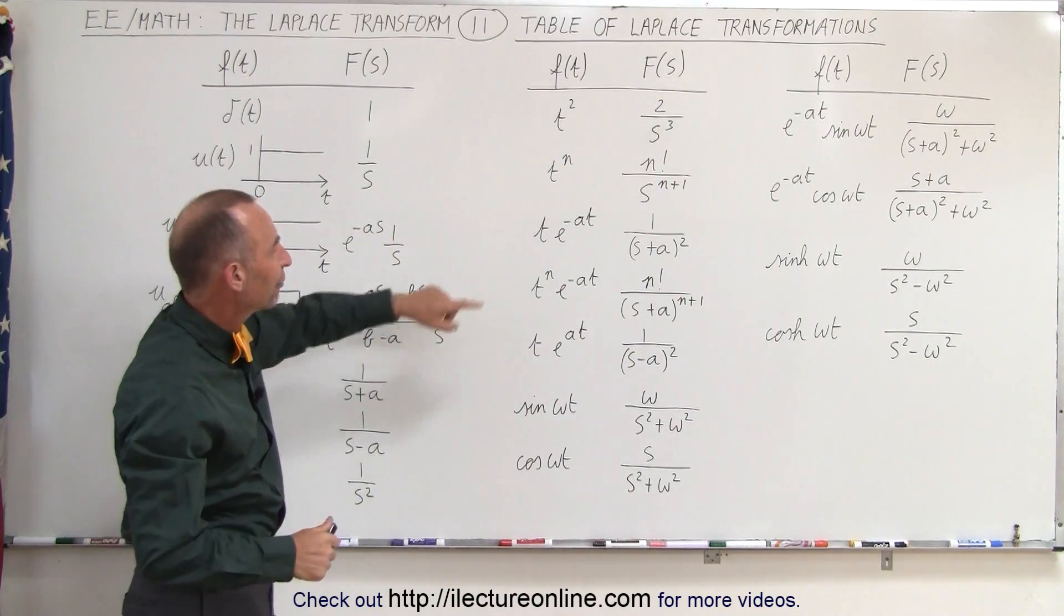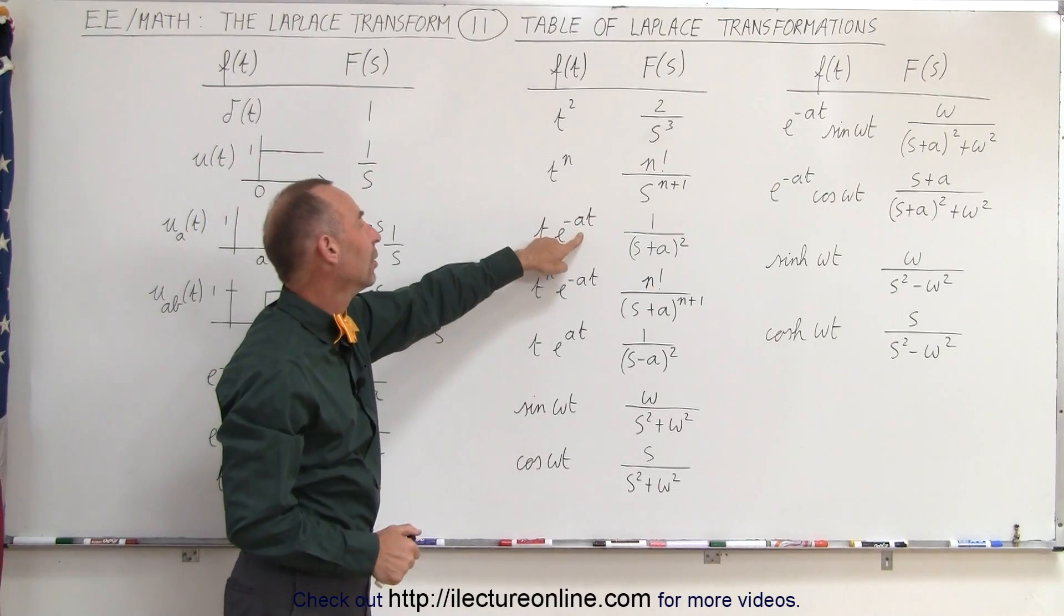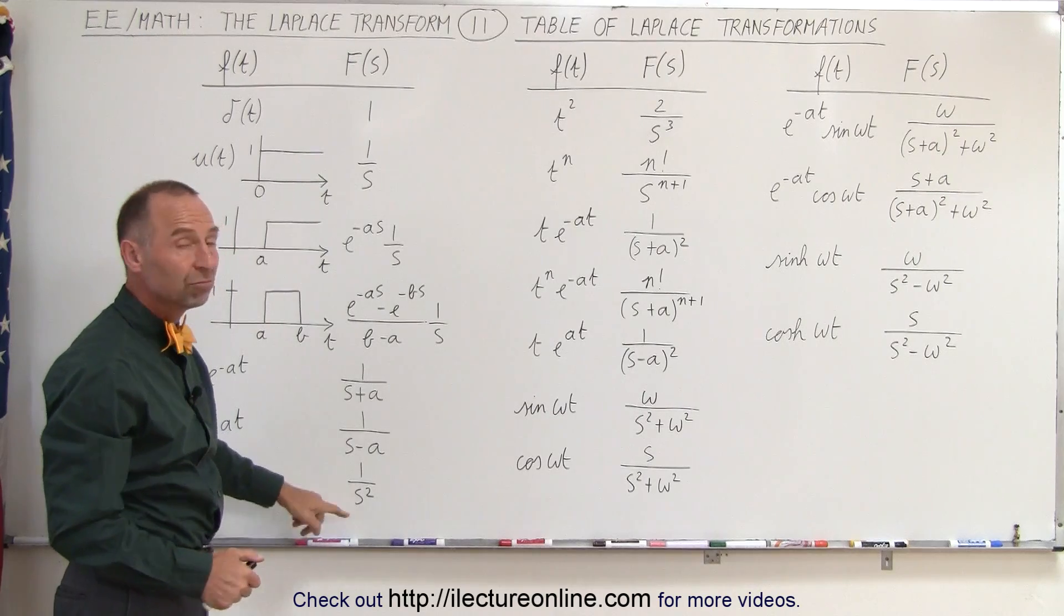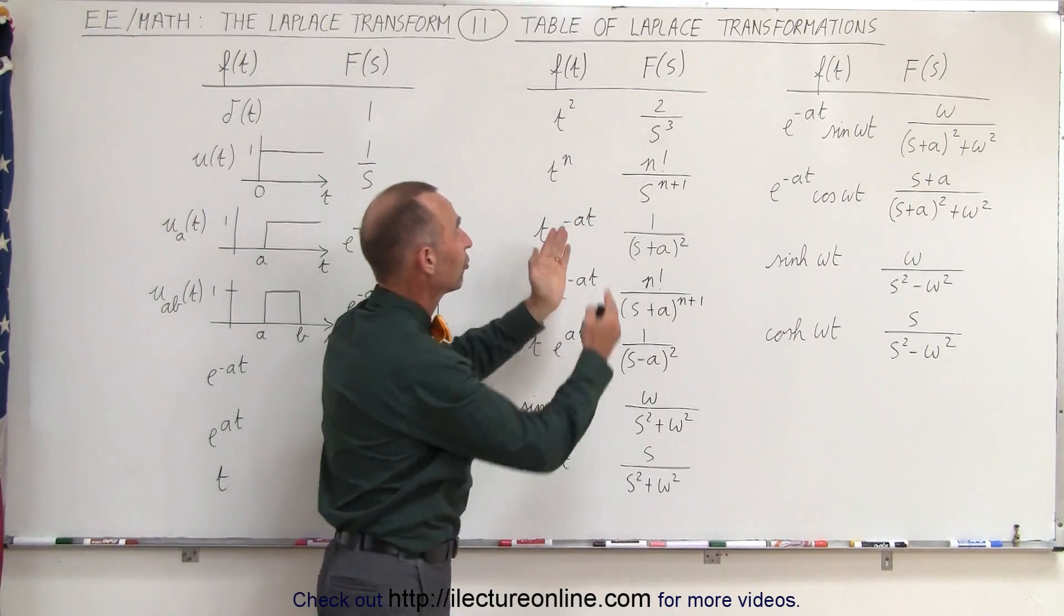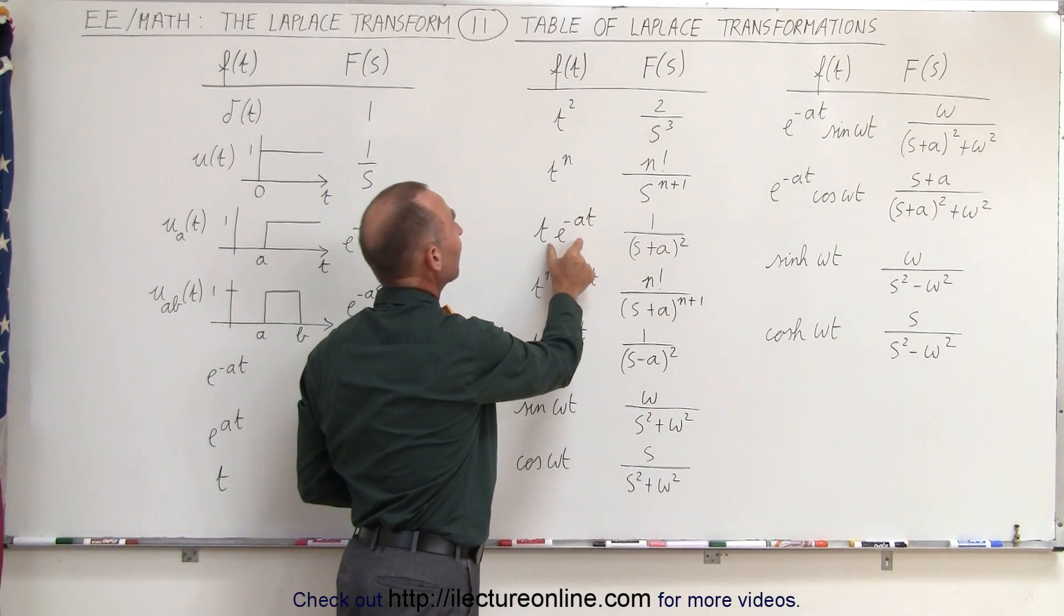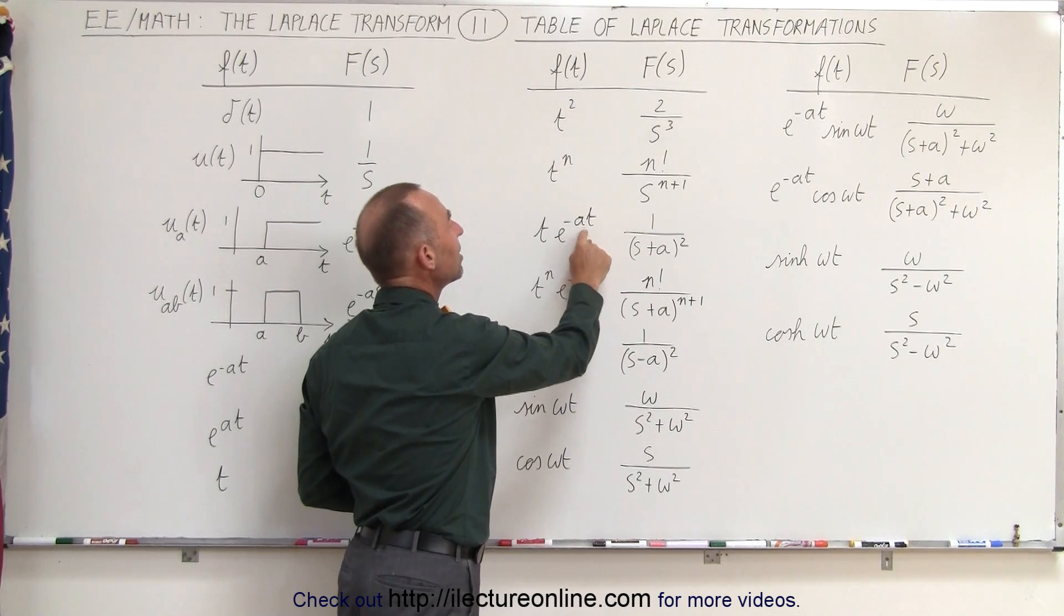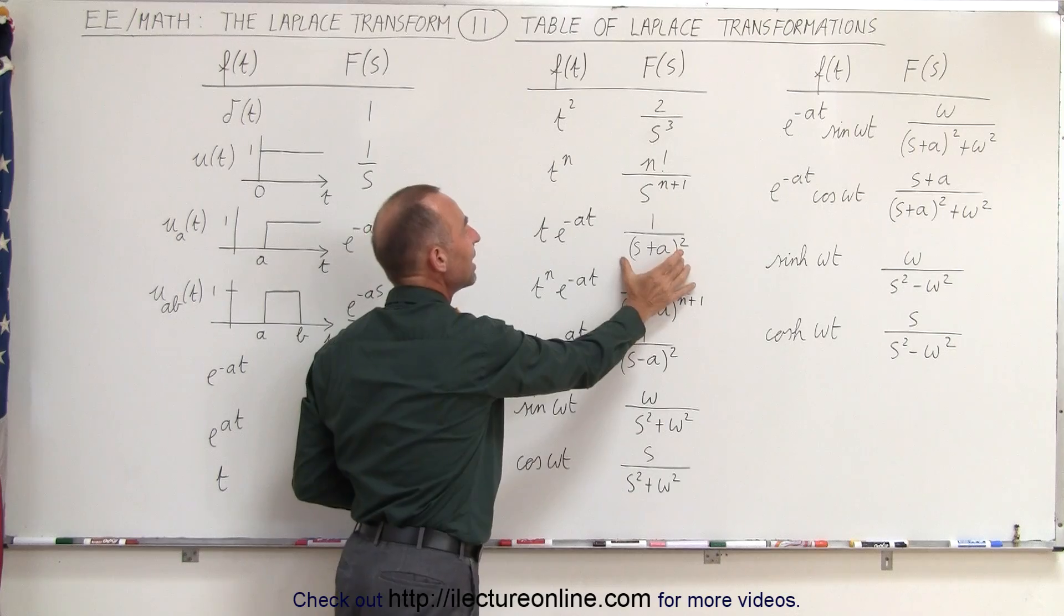If we encounter a function where it's t times e to the minus at, notice for t it would be 1 over s squared, so it's still 1 over something squared, but now instead of having s, we have s plus a. The e to the minus at simply puts the plus a inside here.